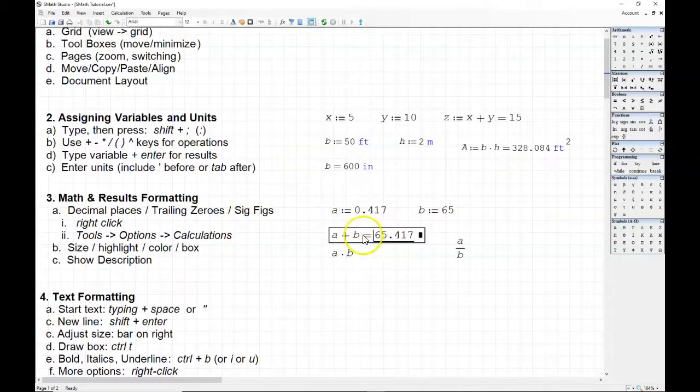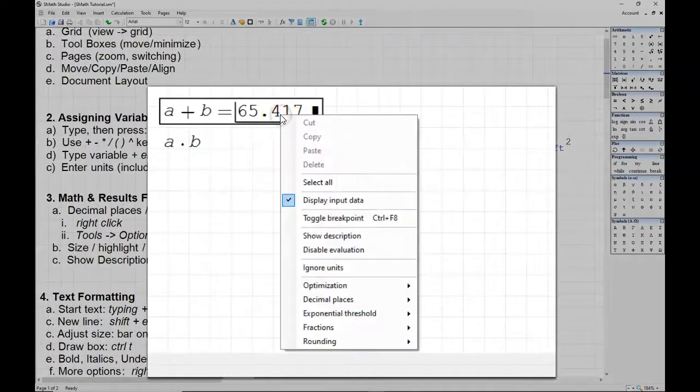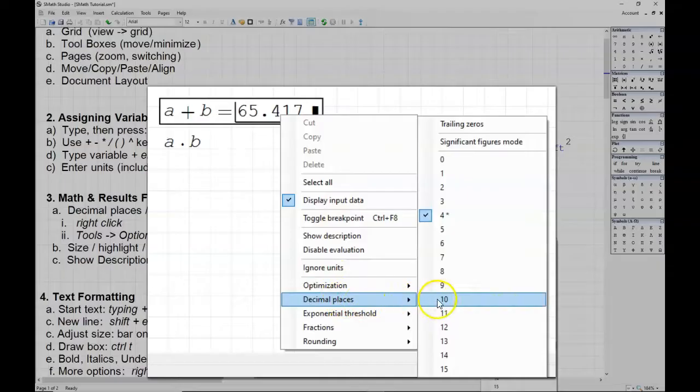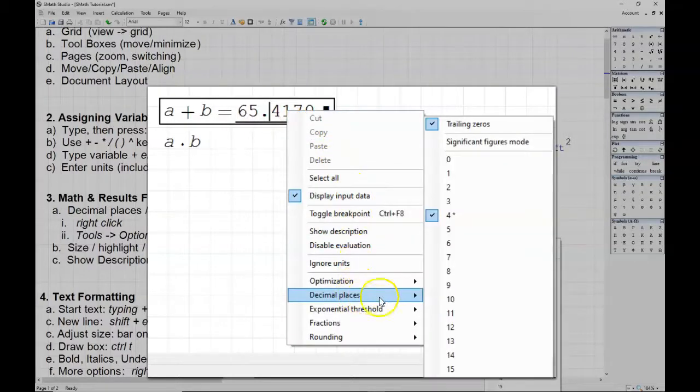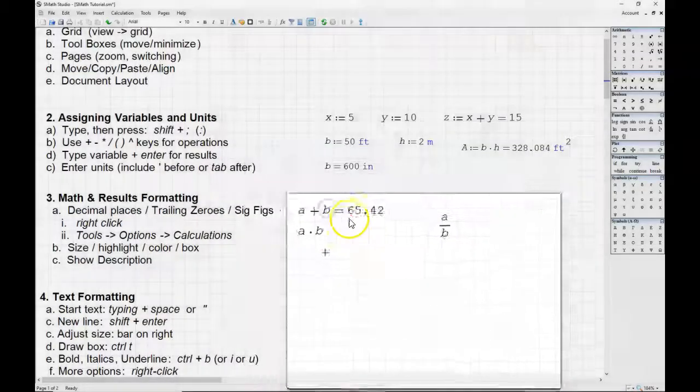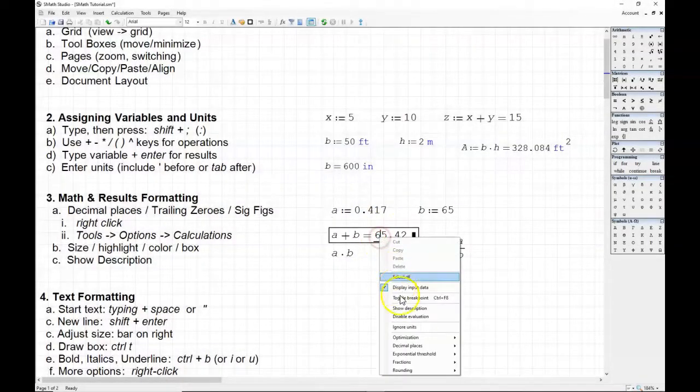I would like to change the precision or the decimal places. And so I'm going to select the equation or the results box. I'm going to right click. Then I can come down here where it says decimal places. And it opens up another point. And then we can see that it's set for four decimal places. And you might say, well I only see three decimal places there. That's because trailing zeros isn't activated. So let's click on trailing zeros. Then there's our fourth decimal place. So I'm going to right click again. Go to decimal places. Right now it's under decimal places. But I can change it to what we call significant figures mode. And when I do that, it will be four significant figures. So it will be 65.42.